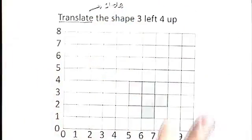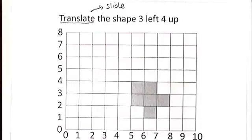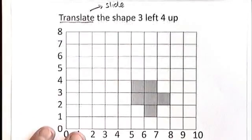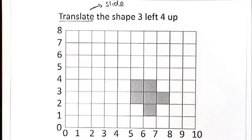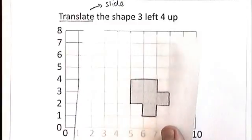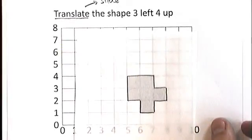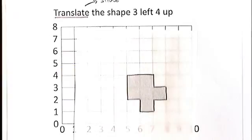If you could in your exam cut out the shape and slide it three units left and four units up, then obviously that's what you would do. But you don't want to go cutting up your exam papers. What you need to do is keep that shape in position and use the tracing paper. You can always ask for tracing paper in your exams. Once you've got the techniques, you probably won't need to use the tracing paper.